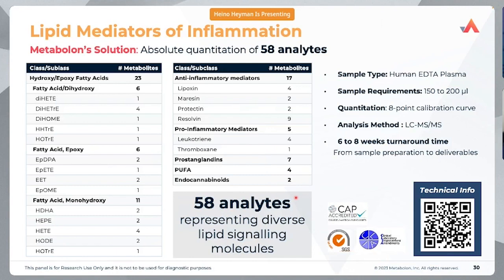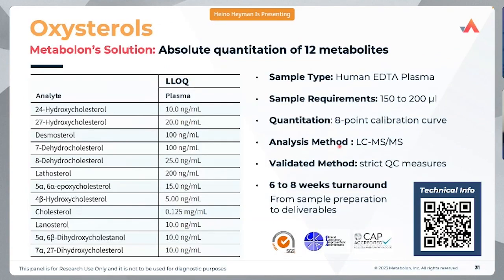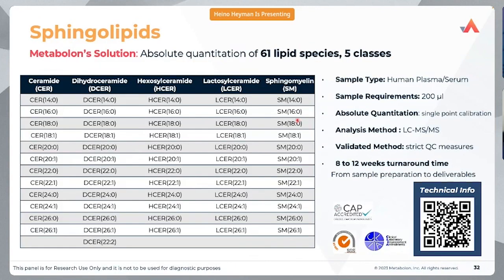Additional panels include: lipid mediators of inflammation — a panel of 58 analytes addressing the inflammation question that so many diseases involve. The oxysterol panel covering 12 cholesterol-related metabolites, indicative of inflammation, cancer, and neurodegenerative diseases. And our sphingolipid panel covering 61 lipid species from five different classes — mainly ceramides and sphingomyelins — with a pathway tool available to aid in visualization.